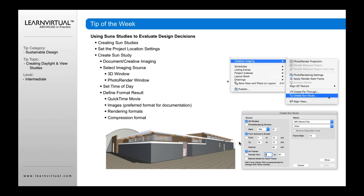When you generate a sun study, you can generate it using the 3D window or the photo rendering window. You define the time of the year, whether it's from sunrise to sunset, and more specifically the time of day. If you're doing a movie, you can define all frames, or you can save out images — I can change the result here to be images that are saved out — which many people use for documentation for a LEED type of study. You've also got rendering formats and compression formats as well.